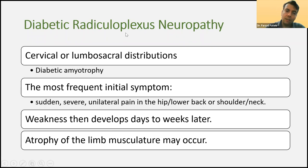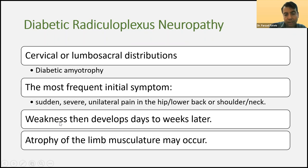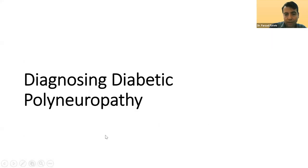A less common manifestation is diabetic radiculoplexus neuropathy or diabetic amyotrophy. The most frequent initial symptom is sudden severe unilateral pain in the hip, lower back, shoulder, or neck, followed by acute or subacute weakness. If untreated, it can cause atrophy of limb musculature in the lower or upper limbs.